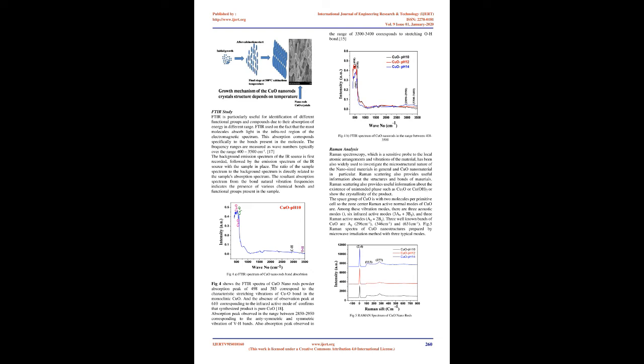Absorption peaks observed in the range between 2850 and 2950 correspond to the anti-asymmetric and symmetric vibration of C-H bonds. Also, absorption peaks observed in the range of 3300 to 3400 correspond to stretching O-H. FIG. 4B shows the FTIR spectrum of CuO nanorods in the range between 400–3500 cm⁻¹.